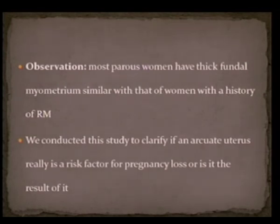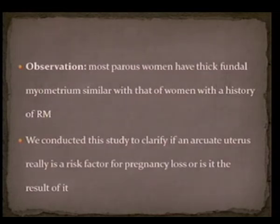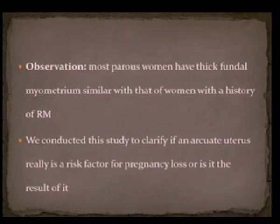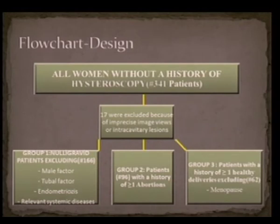Over the years we had an observation: most parous women have thick fundal myometrial measurements similar to those of women with a history of recurrent miscarriage. So we decided to conduct this study, prospectively measuring all patients' myometrium, to clarify whether an arcuate uterus is really a risk factor for pregnancy loss, or whether it is the result of it.